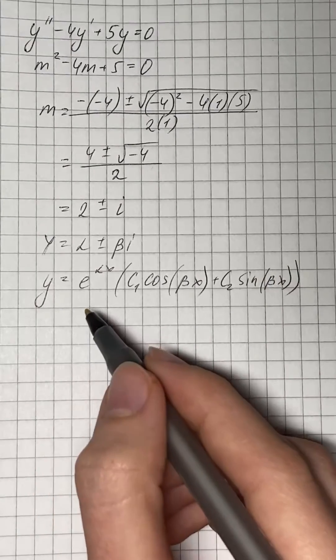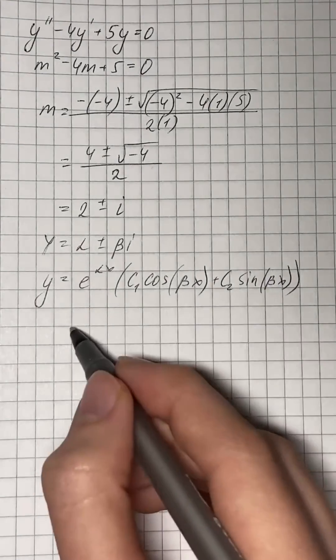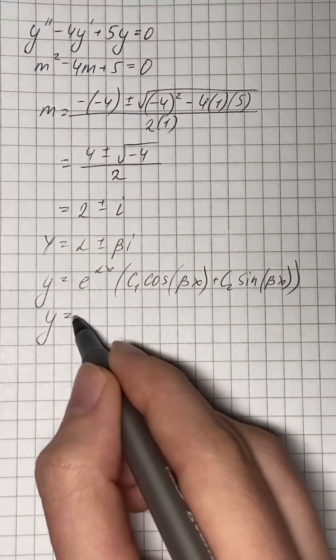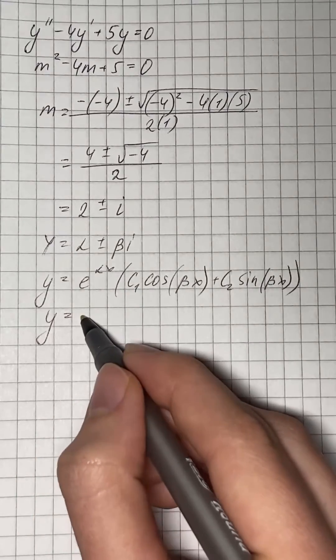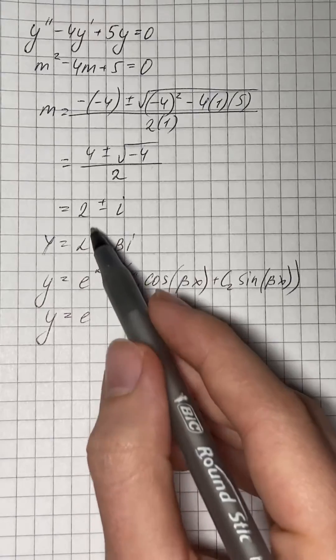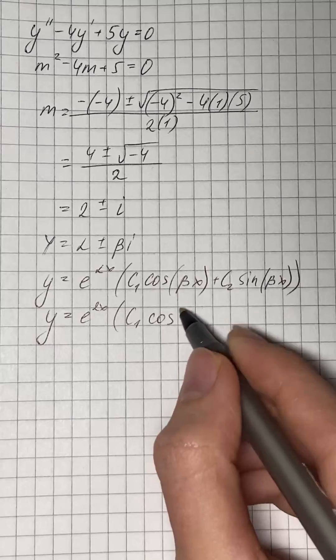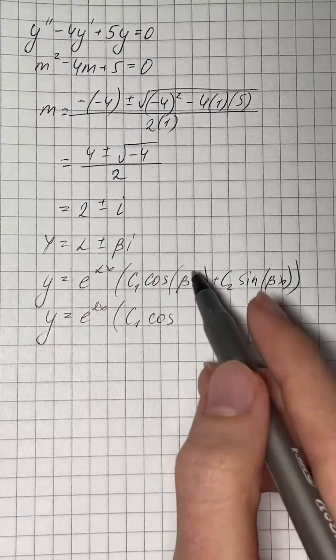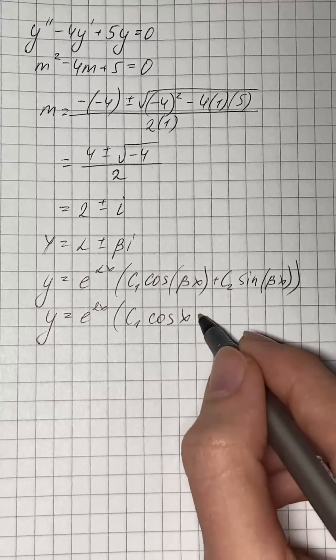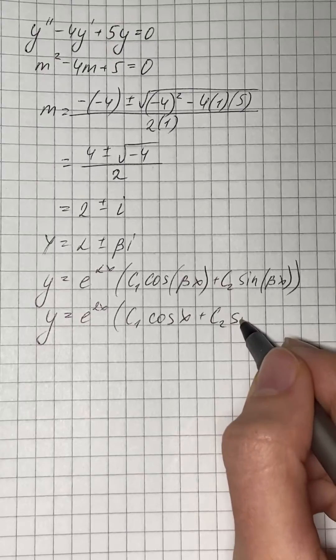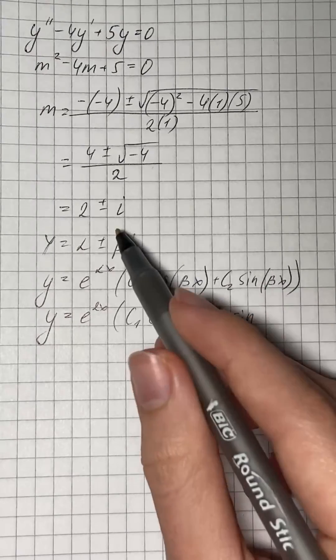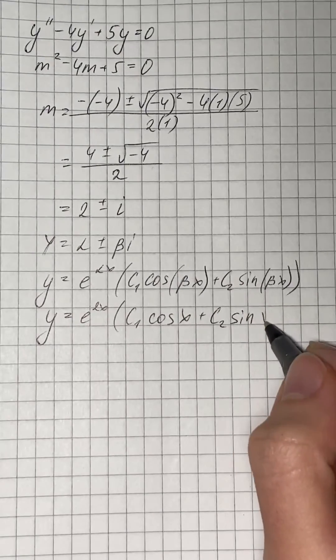Now we substitute the given values in this general equation to find the general solution. That's going to be e to the power of 2x times c sub 1 times cosine of x plus c sub 2 sine of x.